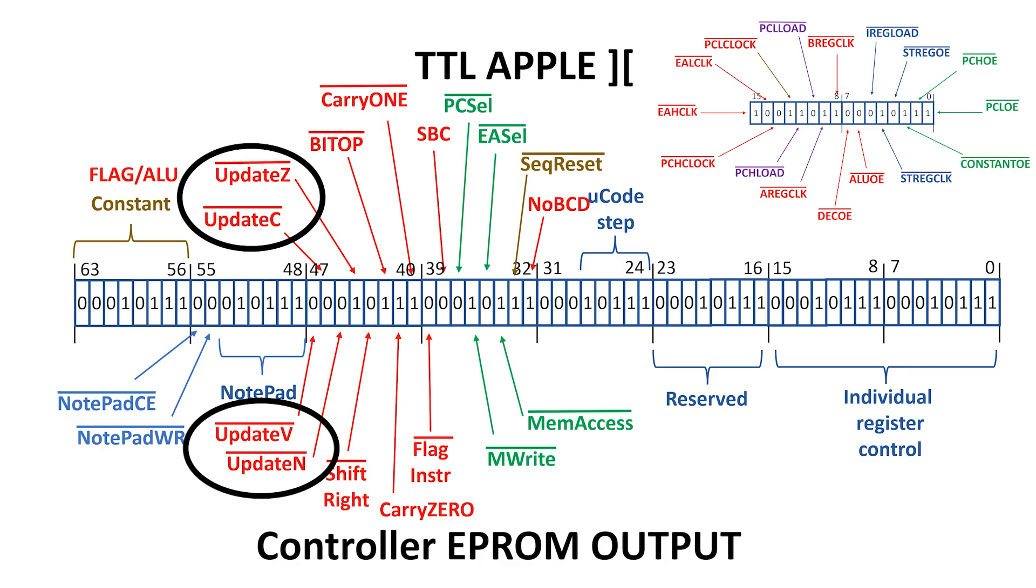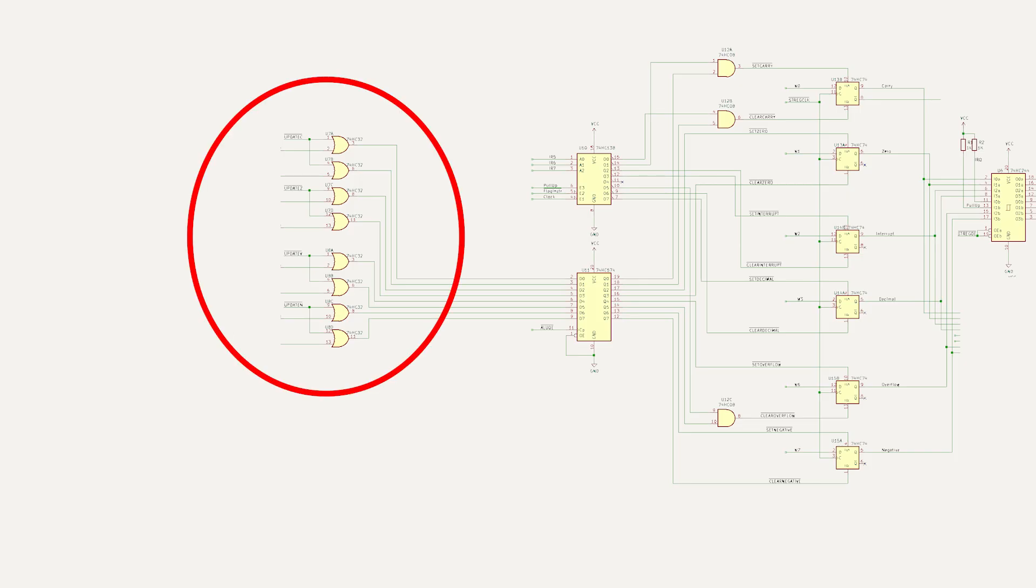These are active low signals, which means they're high when inactive. I use this bank of OR gates to control when the flags can be updated. If update Z-bar is high, then the output of these two gates will be high. These track back to the preset bar and clear bar signals on the Z-flag flip-flop. When preset bar and clear bar are both high, then nothing happens to the stored information or the output of the Z-flag flip-flop.